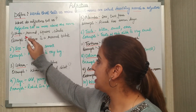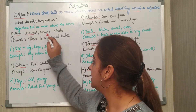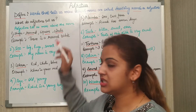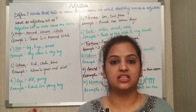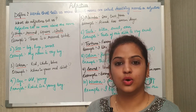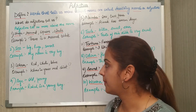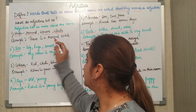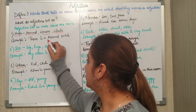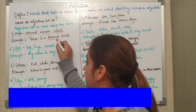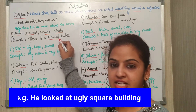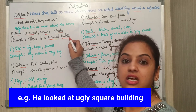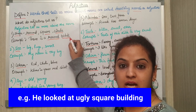Now shape could be any — round, square, circle, rectangle, triangle, or anything else. Example: There is a round table. Now 'round' here is an adjective and 'table' is a noun.